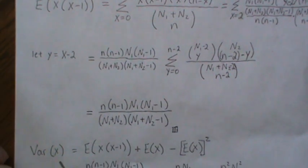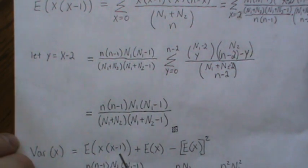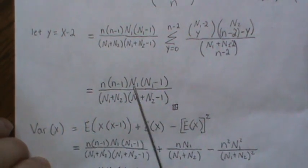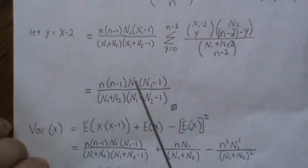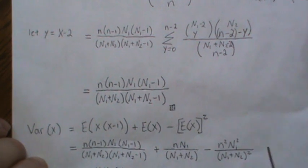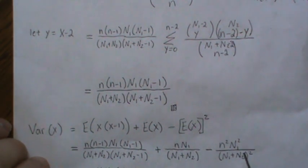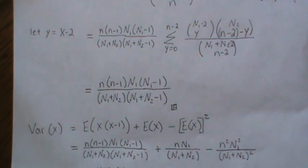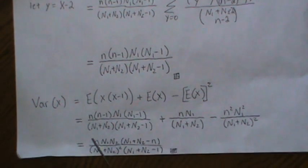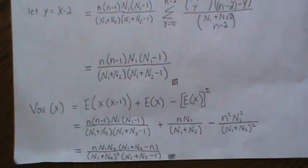And so to calculate the variance, we take the second factorial moment plus the mean minus the mean squared. So this right here is the expected value of X squared, because that's an X squared minus X, and then we have the plus X. So then we plug in the right numbers. This is the second factorial moment goes here. The mean we calculated here, and then the mean squared is this. You just square each of those. And then the next step is algebra. You combine them, get like denominators, and then combine. And then this is the end result. So this is the variance of the hypergeometric distribution.